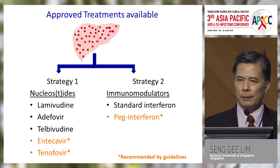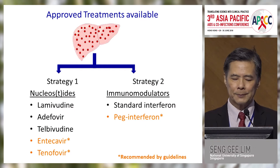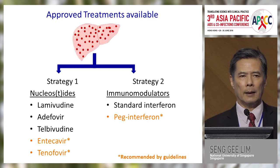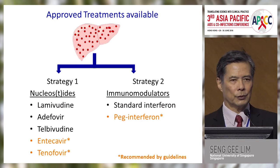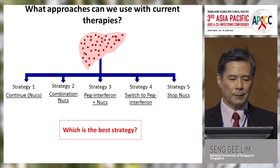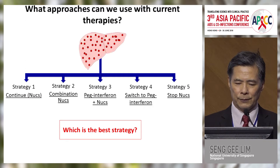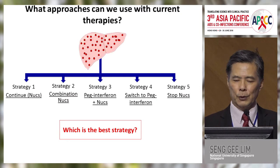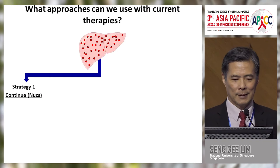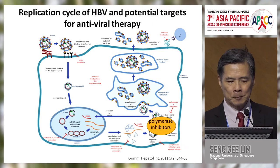There are approved treatments available now. On the left-hand panel are nucleoside analogs, and on the right are immunomodulators. In orange are the recommended therapies by the guidelines: entecavir and tenofovir, which are polymerase inhibitors with a high genetic barrier, while peg-interferon is still used today but not very frequently. There are several treatment strategies: strategy one is to start patients on nucleoside analogs and continue them; strategy two is to combine nucleoside analogs; strategy three is to use interferon combined with nucleoside analogs; strategy four is to switch from nucleoside analogs to interferon; and strategy five — surprisingly — is to stop treatment, which we wouldn't dare do in HIV, but there's some very interesting data on stopping therapy for hepatitis B.